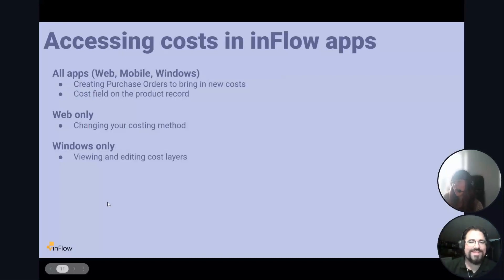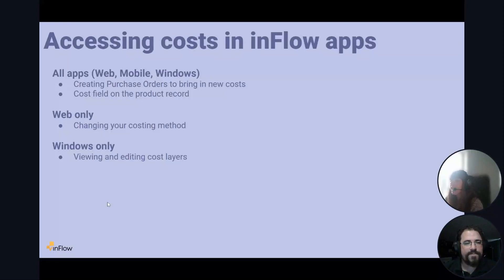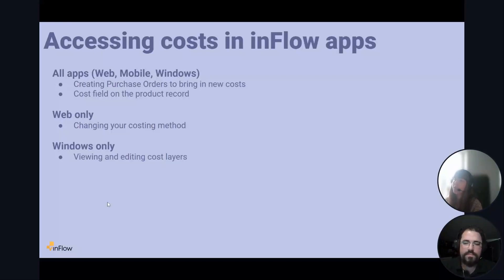A quick note on how to access cost settings across Inflow apps. On all apps — web, mobile, and Windows — you can create purchase orders that bring in new costs, and you can see the cost field on the product record. If you need to change your costing method, that has to be done from the web app at app.inflowinventory.com. And currently, viewing and editing cost layers is only possible in the Windows app.